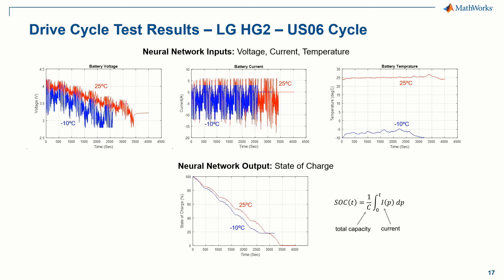Here are results for one of the tested drive cycles, the aggressive USO6 cycle for the LG HG2 cell. The neural network inputs — voltage, current, and temperature — are shown on the top, and the target output value, the state of charge calculated as the integral of the current scaled by the capacity, is shown on the bottom. There is quite high voltage deviation, especially at the lower temperature of negative 10 degrees C, with the battery voltage periodically reaching its limit of 2.8 volts and therefore operating at its maximum power capability.